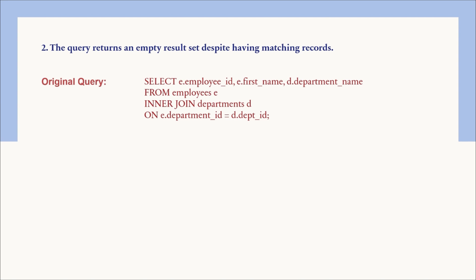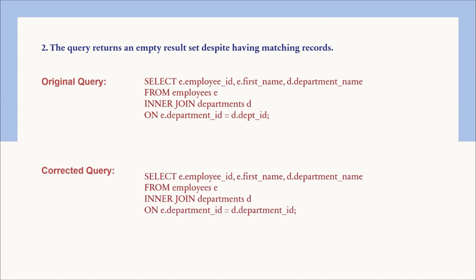This happens due to a column name mismatch in the join condition. In the employees table, the column is named department_id, while in the departments table it is named dept_id. Since the column names are different, the ON condition finds no matches, resulting in an empty set. To fix this, we match the correct columns: department_id from employees and dept_id from the departments table.